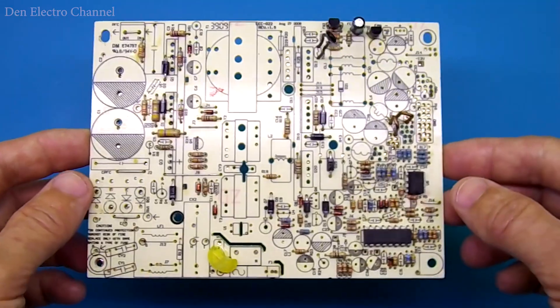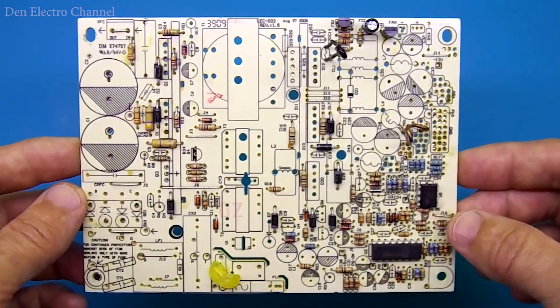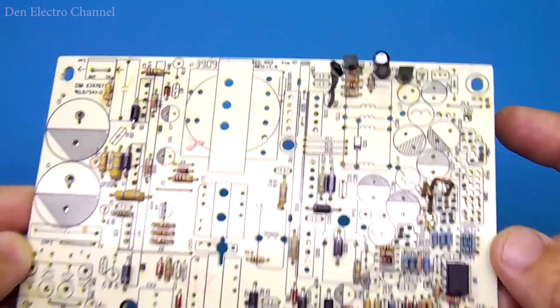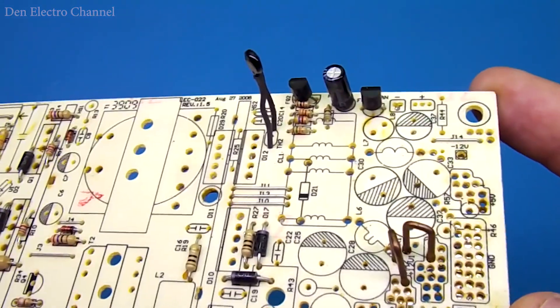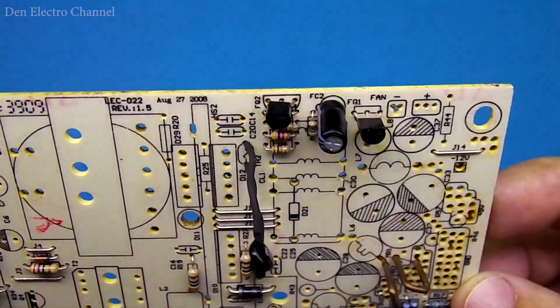The thermostat is built on a factory circuit that is used in an ATX computer power supply. With its help, the fan speed was regulated in the power supply. The circuit is very simple. It works from 12 volts and consists of only 9 parts.